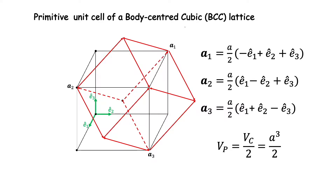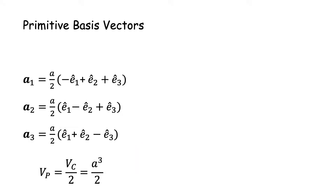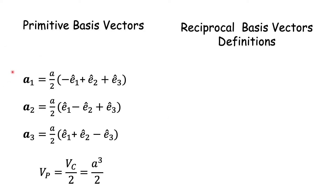Note that in all these expressions, a is the edge length of the conventional unit cell. So now we have all the ingredients: a1, a2, a3, the primitive basis vectors, and the volume of the primitive unit cell, Vp = a³/2. These are the ingredients required for constructing the reciprocal lattice vectors, because they are defined in terms of these three vectors.